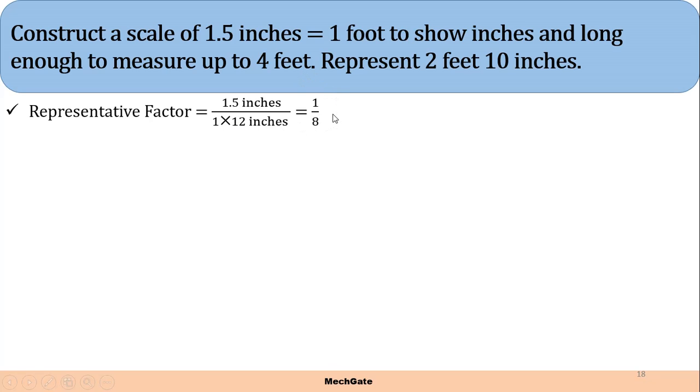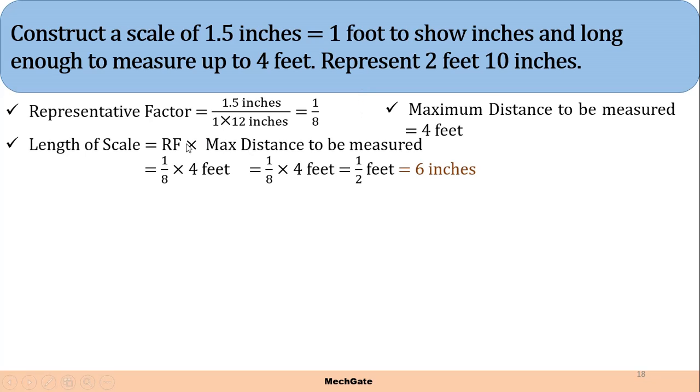Maximum distance to be measured is 4 feet. Next step, let's find out the length of scale. Length of scale is equivalent to RF into maximum distance to be measured. So 1 by 8 into 4 feet gives us 1 by 2 feet, half a foot, which is equivalent to 6 inches. So our length of scale is 6 inches.